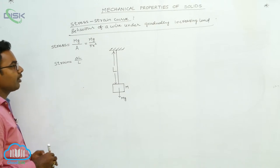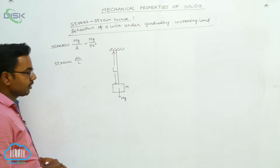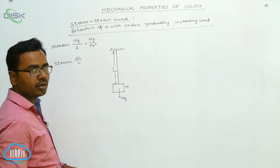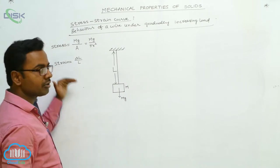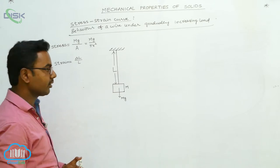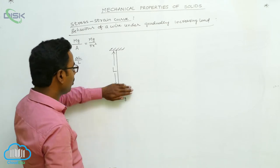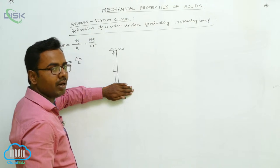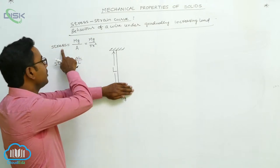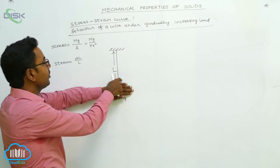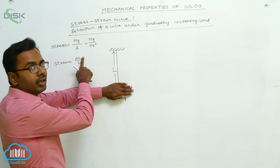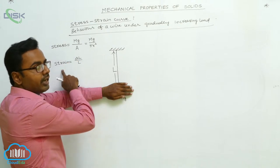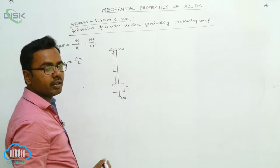For each load we suspend here, we find the stress and strain values. Strain values are taken on the x-axis and stress values on the y-axis, then we plot the graph. Initially, when no load is attached — mass is 0 — stress is 0, no elongation is produced, so strain is also 0. The corresponding point in the graph is the origin, with coordinates (0, 0).